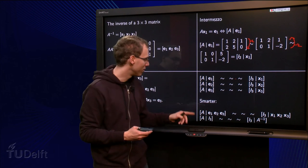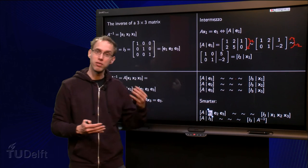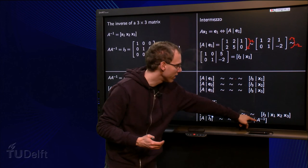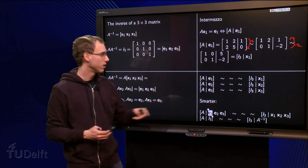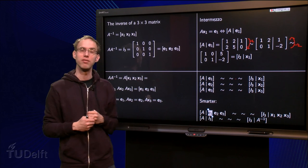Let's see what has happened. We start with A and the matrix e1, e2, e3 equals the identity matrix. And after row reductions we are at I3 and we got A inverse, because the matrix consisting of x1, x2 and x3 is exactly A inverse.